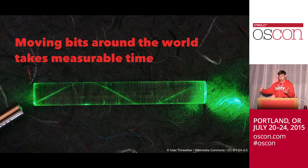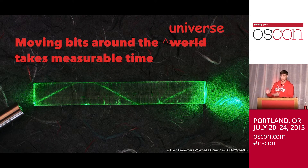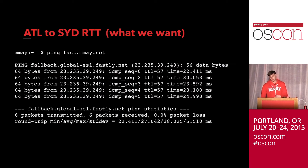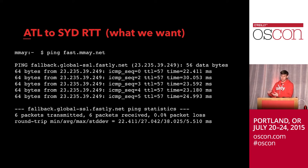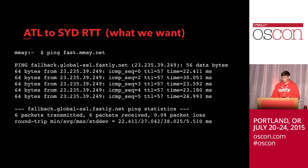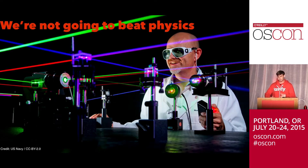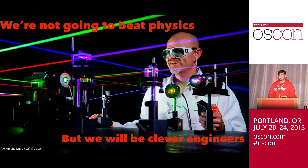Moving bits around the world takes time. Instead of that 250 to 300 milliseconds, what we really want to see are latency times closer to 20 or 30 milliseconds — something a lot more reasonable. When we talk about how we can do this, it's about moving things closer to where they're accessed. When we talk about CDNs as the technology that enables us as web developers to do this, it's important to understand they're not magic. We're not beating the speed of light — it's really clever engineering.